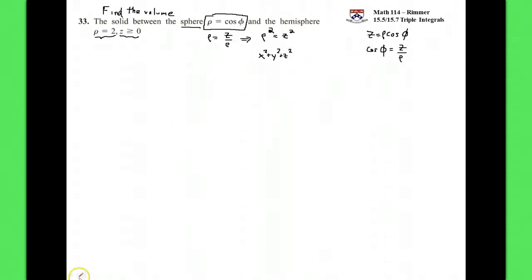Oh I'm sorry, z over ρ times ρ gives us just z on the other side. So we have ρ squared, which is x squared plus y squared plus z squared, and this equals z.